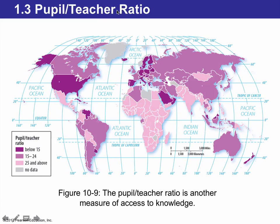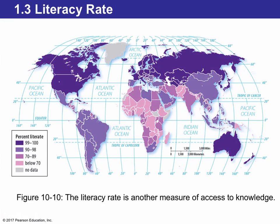The pupil-to-teacher ratio means how many students there are per teacher. The lower the number of students per teacher, the better the expected quality of education. In the US, pupil-to-teacher ratios are below 15. Sub-Saharan Africa and South Asia have the highest pupil-to-teacher ratios, meaning classrooms there are very large compared to those in the United States or South American countries like Venezuela. The literacy rate measures the percentage of people who can read and write. Most countries in the Northern Hemisphere have high literacy rates, while parts of Sub-Saharan Africa have below 70% literacy rates.